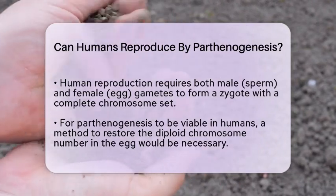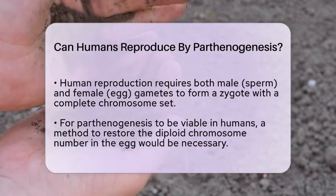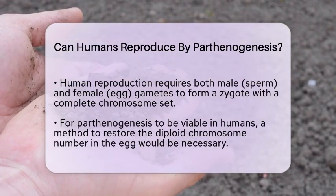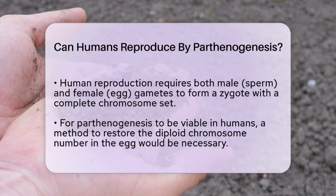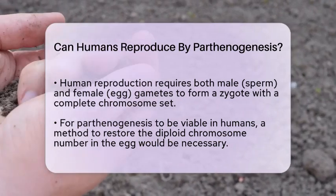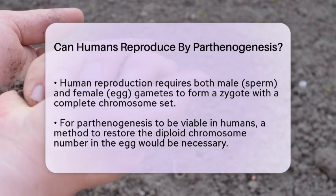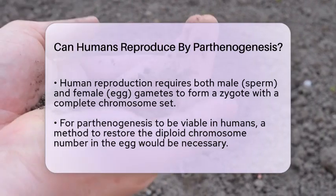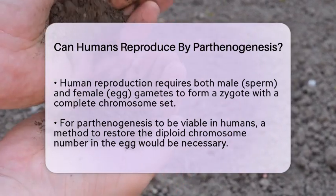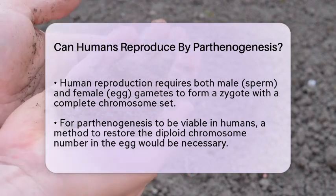For parthenogenesis to work in humans, there would need to be a way to restore the diploid number of chromosomes in the egg cell. Unfortunately, this mechanism is not naturally observed in humans. As a result, parthenogenesis is not a viable method of reproduction for our species.